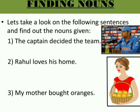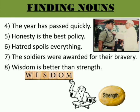Third sentence: 'My mother bought oranges' — mother and oranges are nouns; mother is a common noun and oranges is also a common noun. The next sentence: 'The year has passed quickly' — year is the noun here, and it is a common noun.